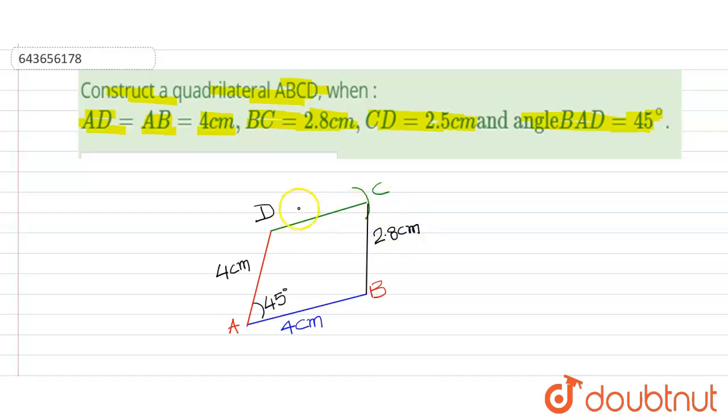And DC is given as 2.5 cm, and these two arcs meet at point C. Then our construction is completed.